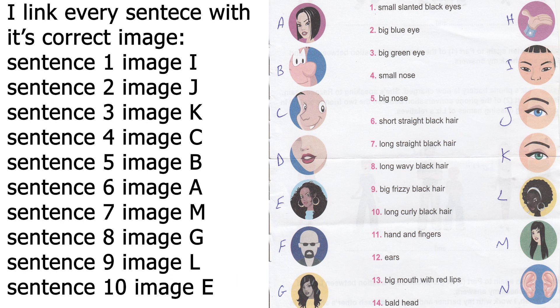Big nose with picture number C — because his nose is very, very small. Number 5: big nose, that goes to image B. Number 6: short, straight, black hair — that's picture A. Number 7: long, straight, black hair — that is picture M. Number 8: long, wavy, black hair — that is picture G.